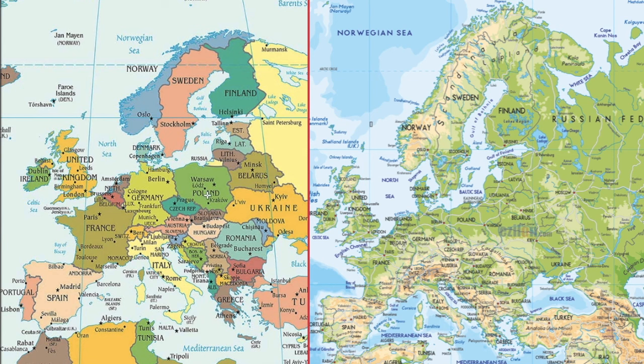First let us look at the political map of Europe. Here we have marked the most important countries. Let us start with the Scandinavian countries.